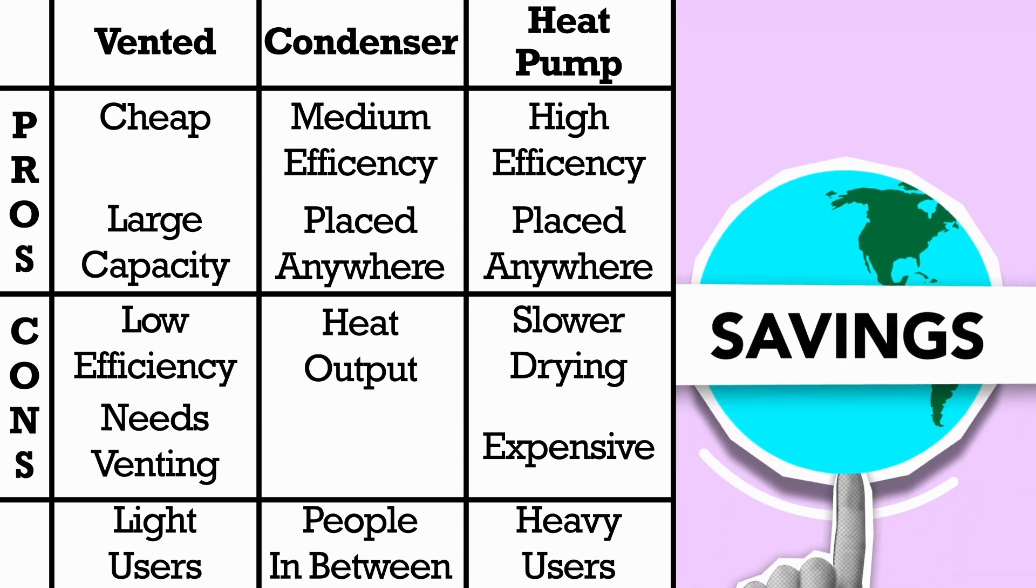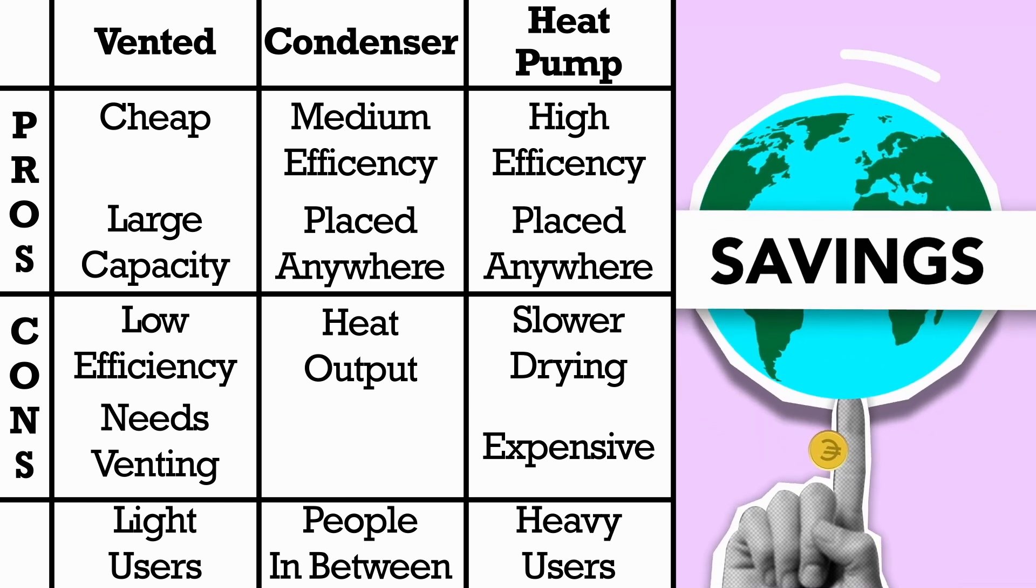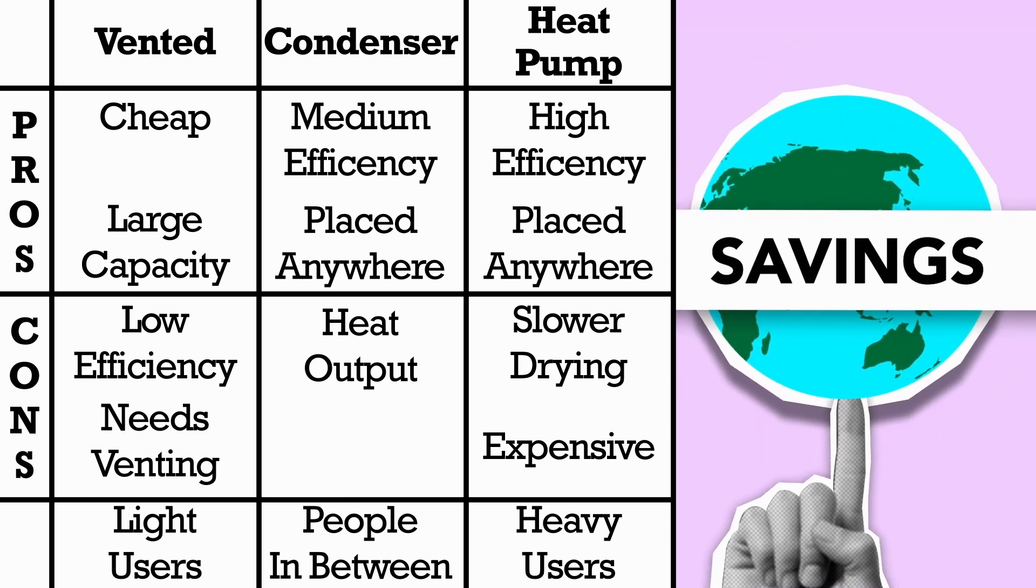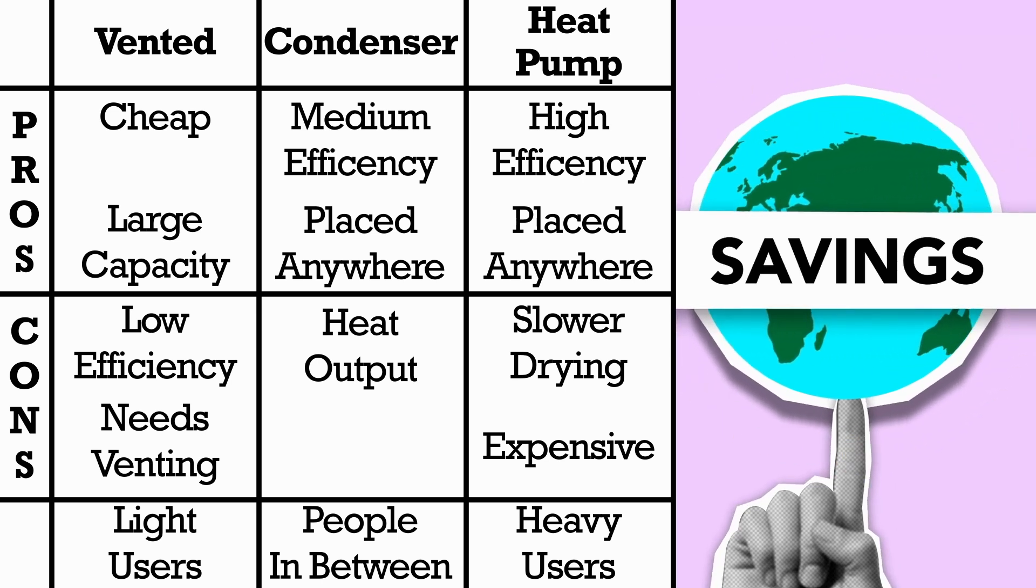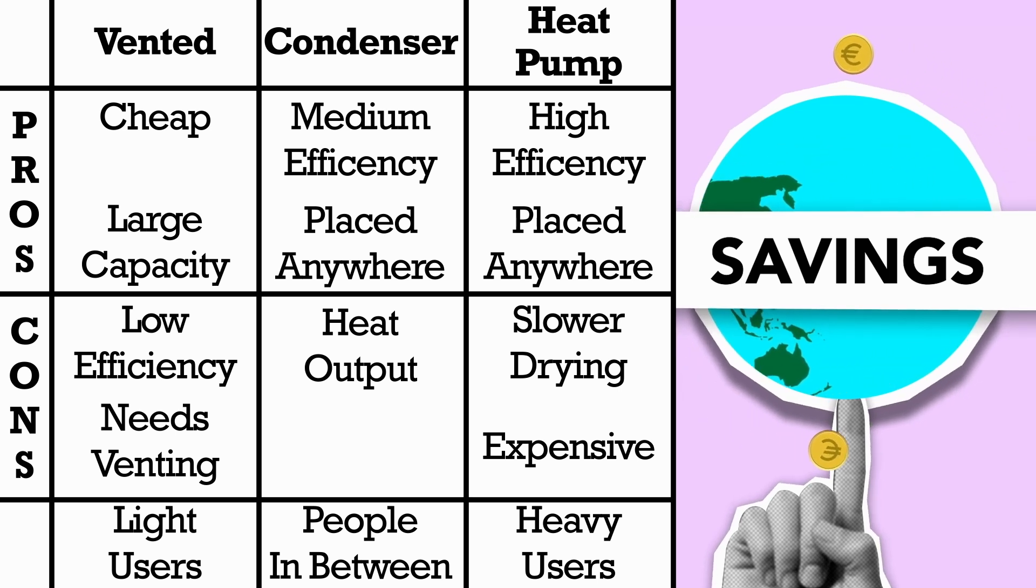We can see that ventless dryers are useful for light users who are on a budget. For example couples who only use their dryer when it's not possible to air dry, as they will likely not redeem any costs from energy savings. Heat pump dryers are better for the opposite such as heavy users with large families and condensers fall somewhere in the middle. Although anyone who is conscious of the environment should prioritize the energy efficient heat pump dryers.